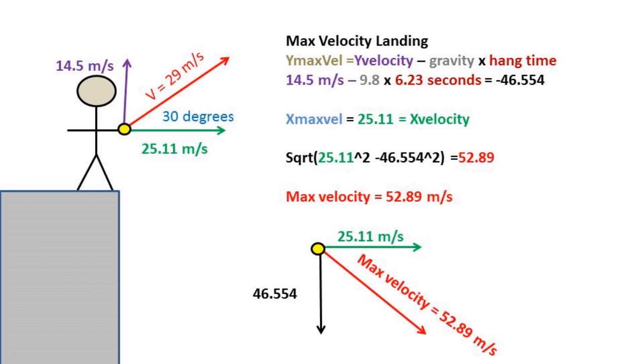To find the max velocity of the ball, we can use our velocity equation and plug in our hang time and initial velocity in the y direction to get the max velocity in the y direction. This gives us 46.54 meters a second. We can then take our x velocity and plug it into the Pythagorean Theorem with our max velocity in the y direction to give us our max velocity of 52.89 meters per second.